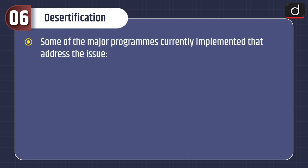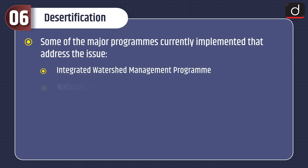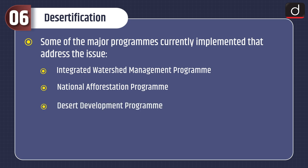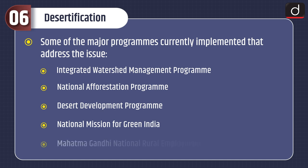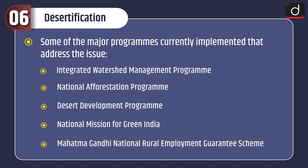Some of the major programs currently implemented that address the issue are: Integrated Watershed Management Programme, National Aforestation Programme, Desert Development Programme, National Mission for Green India, and Mahatma Gandhi National Rural Employment Guarantee Scheme.